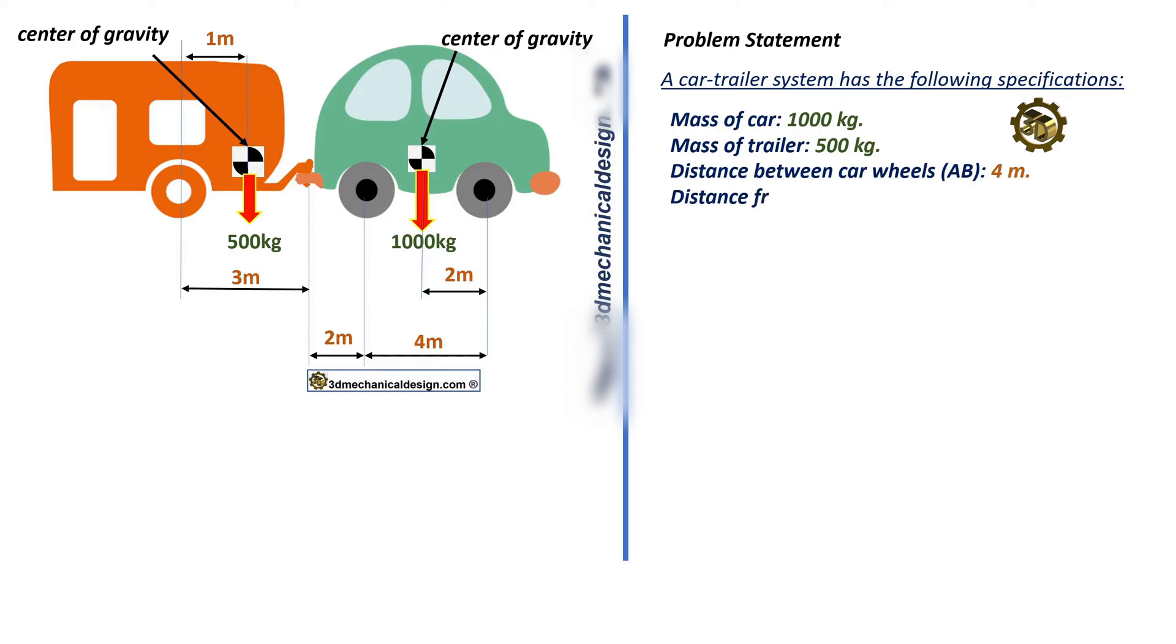Distance from front wheel to car center of gravity: 2 meters. Distance from rear wheel to hitch: 2 meters. Distance from hitch to trailer wheel: 3 meters. Distance from hitch to rear wheel: 1 meter.